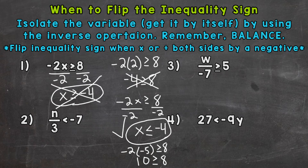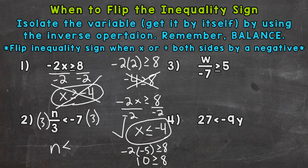Let's move on to number 2, where we have n divided by 3 is less than negative 7. We are dividing by a positive 3, so the opposite is multiplying by a positive 3. We multiply both sides by positive 3 — we do not need to flip the sign because these are positive numbers. The 3s cancel on the left, leaving n is less than negative 21.